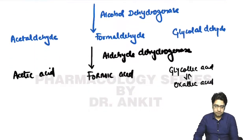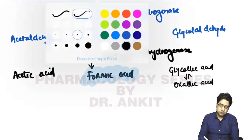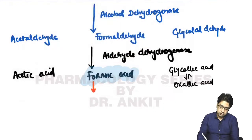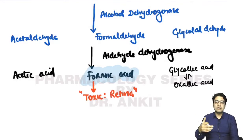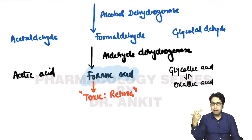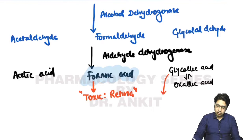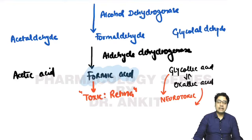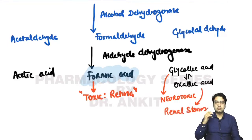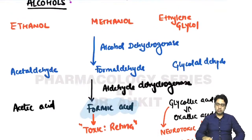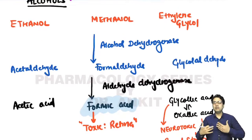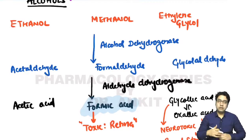Formic acid is highly toxic to neurons and highly toxic to the retina, which is why methanol poisoning leads to permanent blindness. Glycolic acid is also neurotoxic, and oxalic acid can lead to oxalate stones in the kidney causing renal stones. So methanol and ethylene glycol are toxic alcohols.